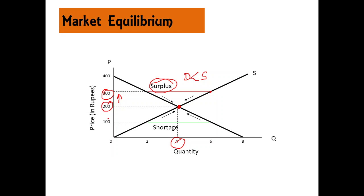As price goes down, demand will increase and supply will decrease, and ultimately equilibrium will be established. Further, if the price is below the equilibrium price, there will be shortage — demand will be greater than supply. This demand force creates incentives for sellers to supply more, leading to an increase in price — an upward movement. As price rises, supply goes up and demand decreases, and equilibrium is established again.